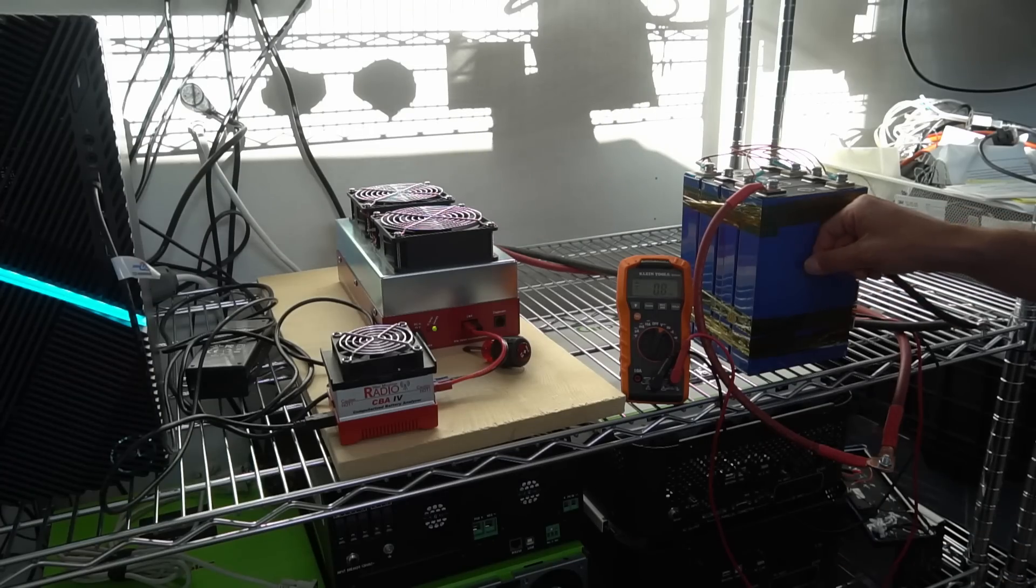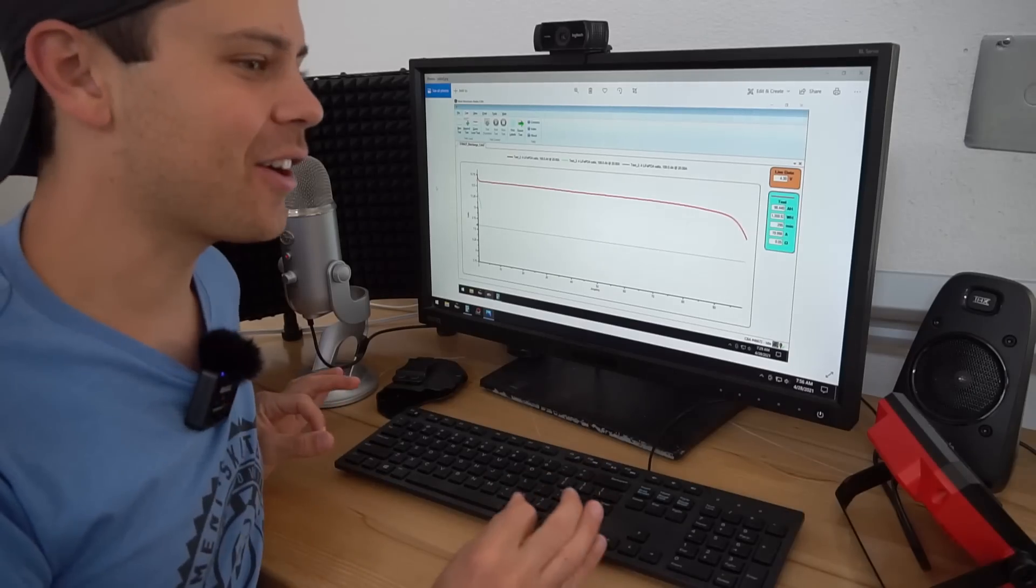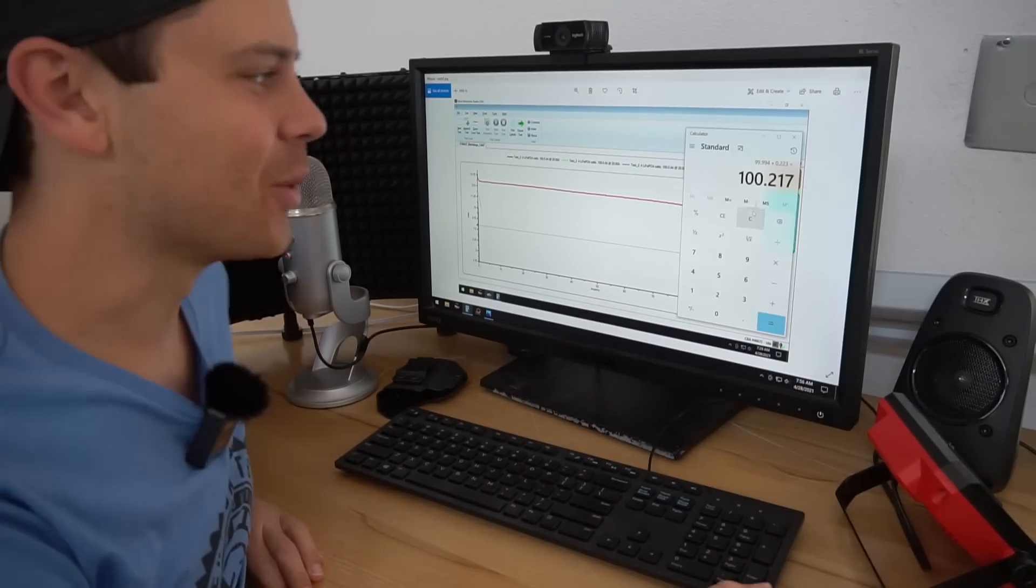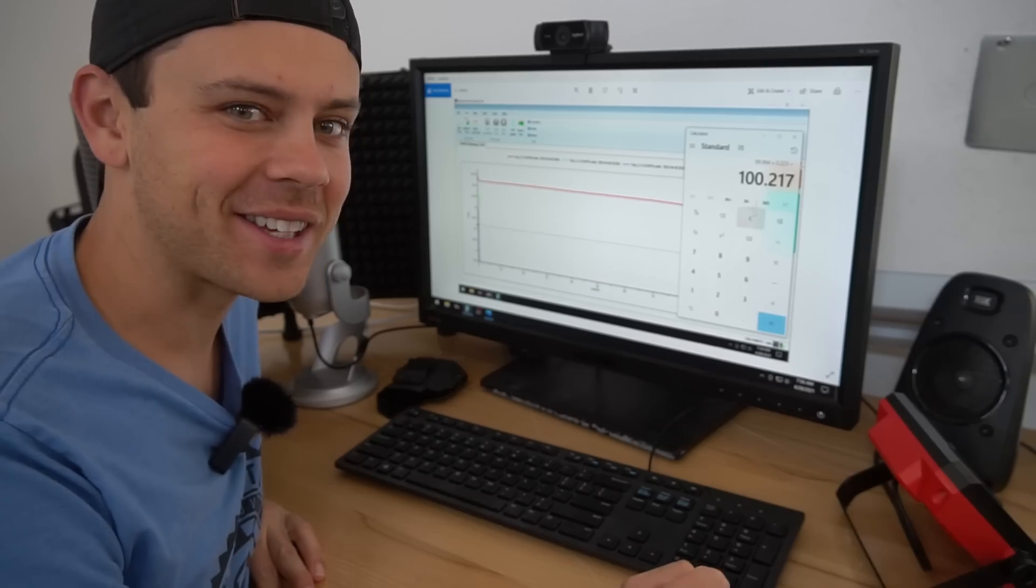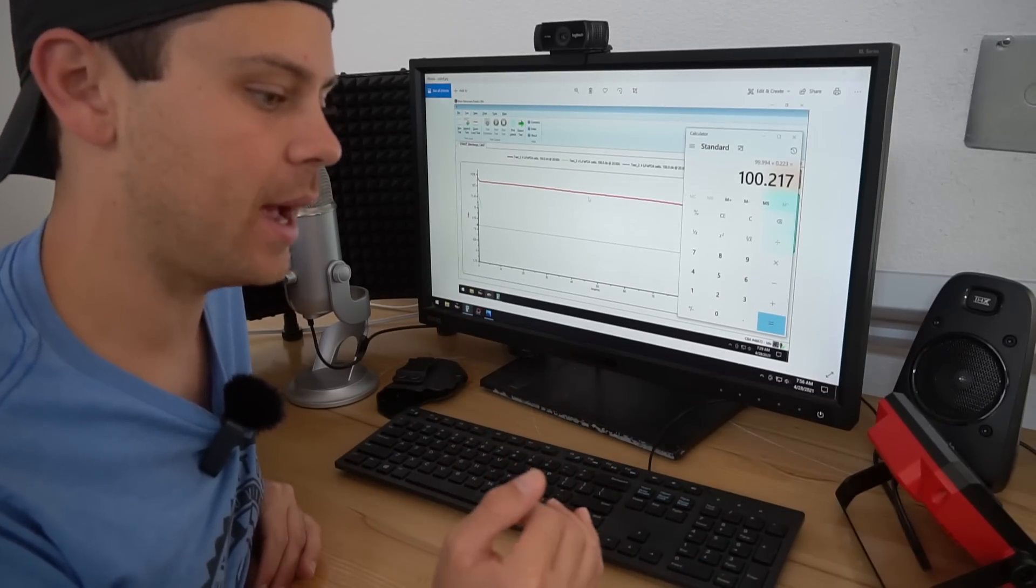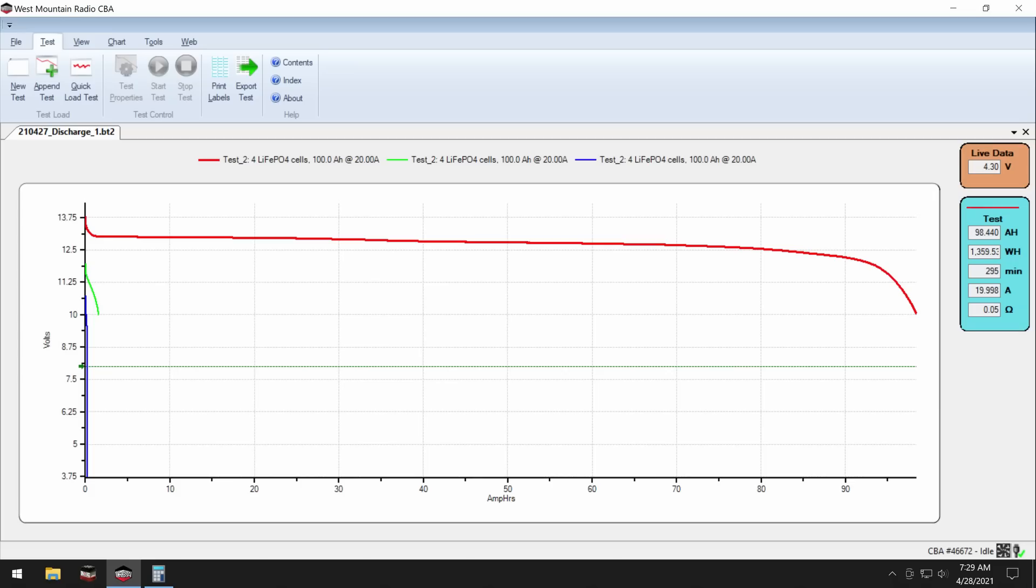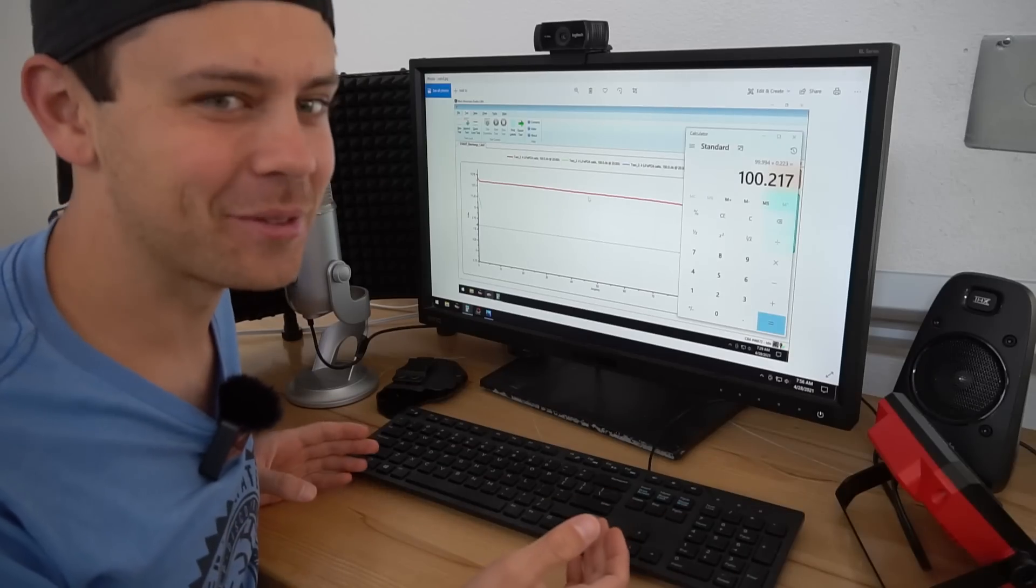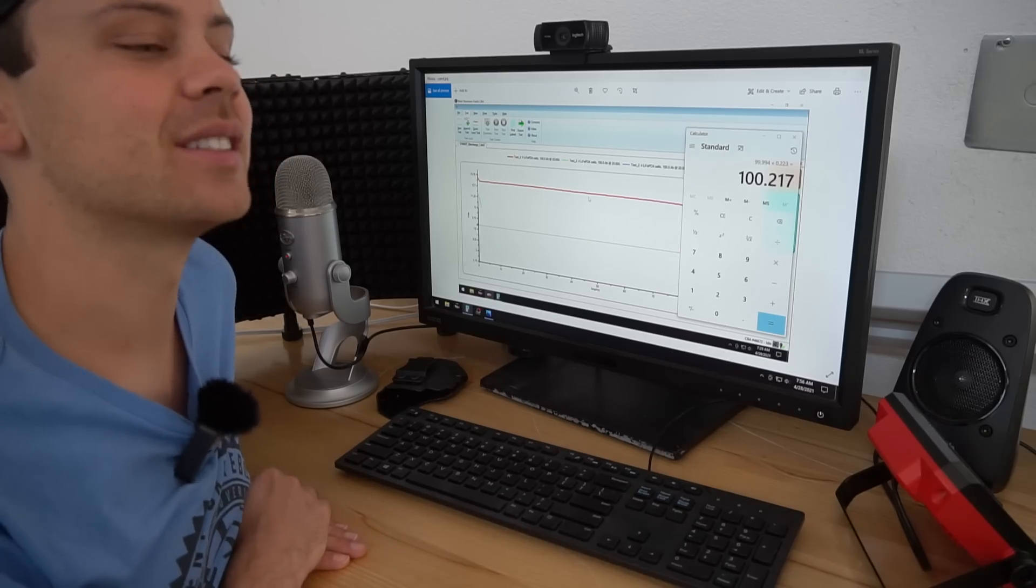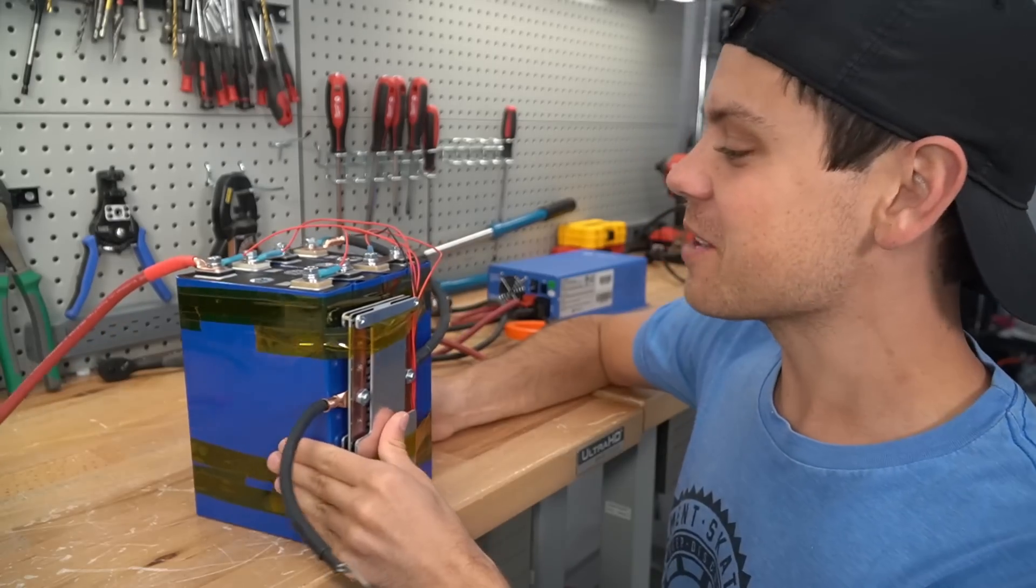So fast forward to the next day and the test is now complete. And this is very hard to believe, but it actually pulled the full capacity, you guys. We got 100.217 amp hours. And we had to test three different times because the last one percent of capacity was hard to access with this BMS because of the low voltage disconnect. So to get it to 2.5 volts per cell, I had to do it two more times. But we actually pulled the full capacity with those junky cells. Can you believe it? I seriously cannot believe this. This is ridiculous.